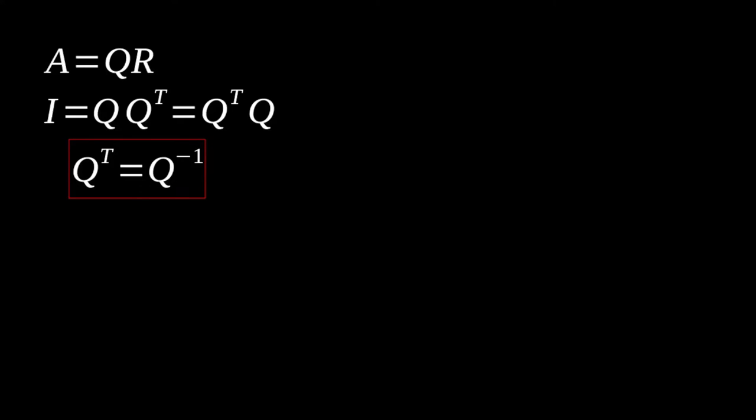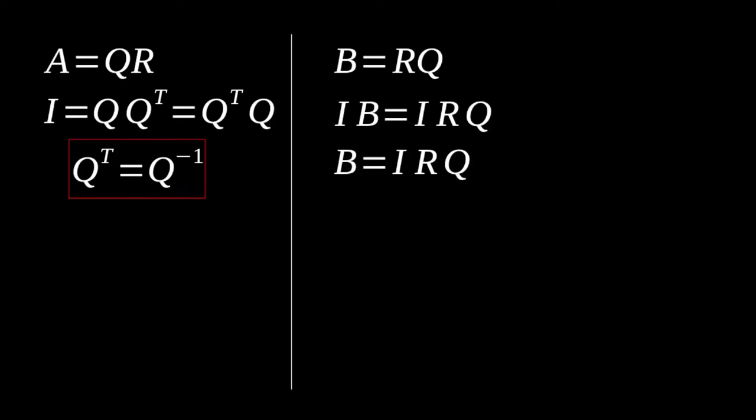Let's set that all aside and highlight that important bit of information. What we're going to do now is suppose that we compute some new matrix B with RQ, which we got from our QR decomposition of A. So we're just going to flip those around, compute B. Now this is where things are going to get a little bit interesting. We're going to left-multiply both sides here by our identity matrix. On the left-hand side, that doesn't really do anything. We can just say that's still our B matrix. So now we have B is equal to the identity matrix by R by Q.